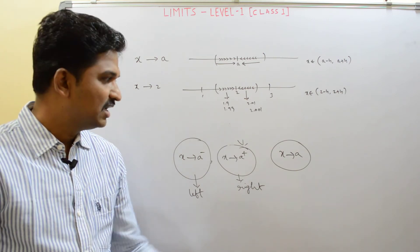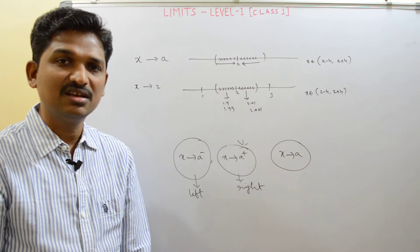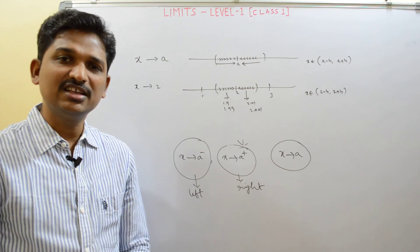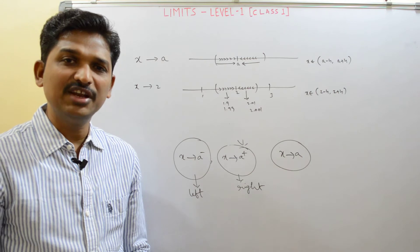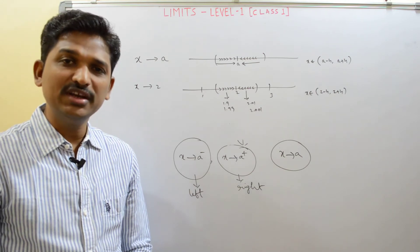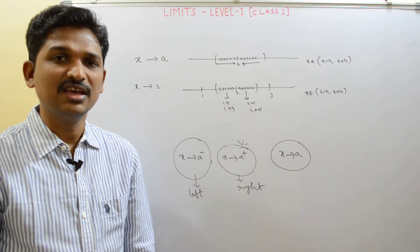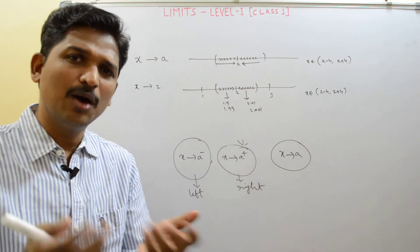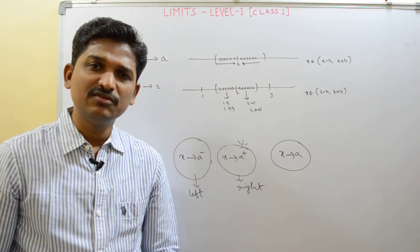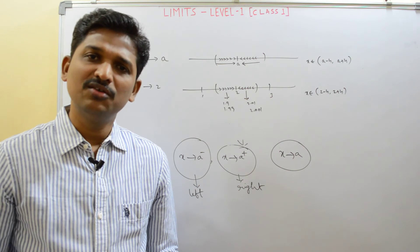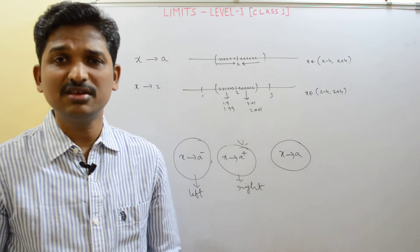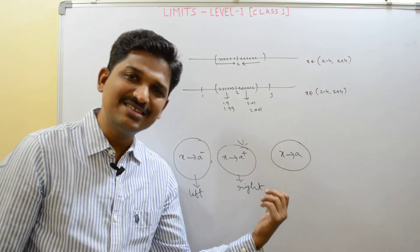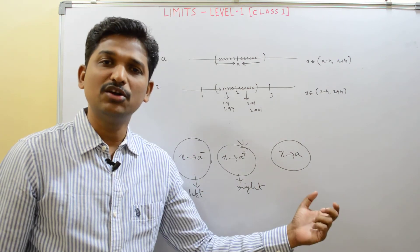Here is one very important point. X approaches to a means x values are slightly less than a and very, very nearer to a, or slightly greater than a and very, very nearer to a. The key point is x is NOT equal to a. When x is approaching to a, we say 'approaches to a.' If x were equal to a, we would say x equals a — not 'approaches.' X approaches to a means all x values are slightly less than or slightly greater than a, but not a itself.